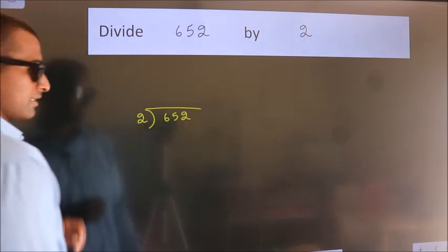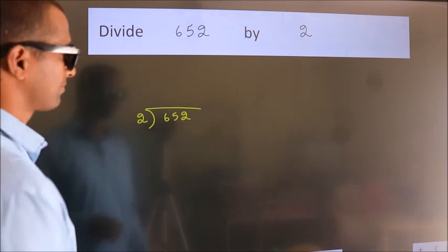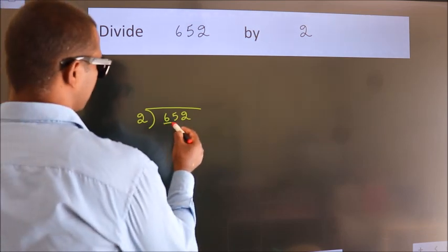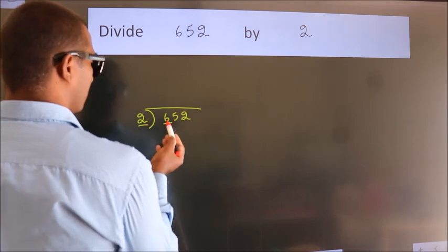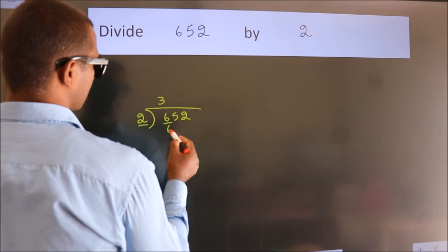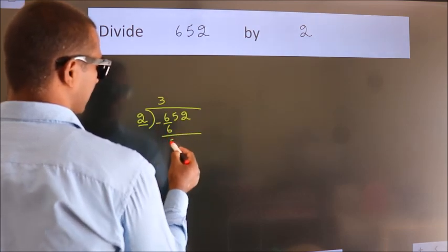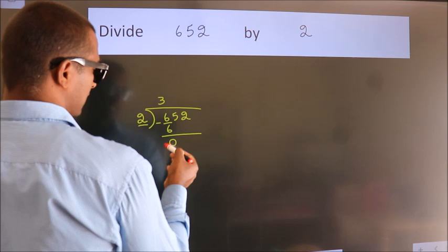This is step 1. Next, here we have 6, here 2. When do we get 6? In the 2 table, 2 threes are 6. Now we subtract. We get 0.